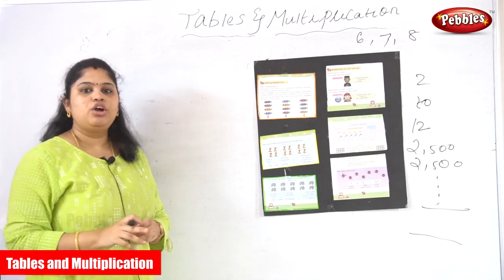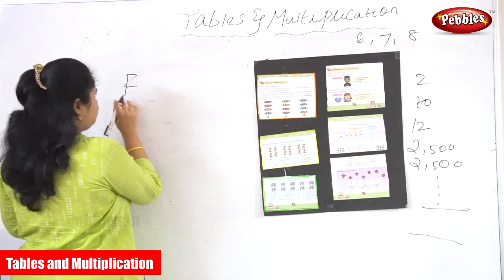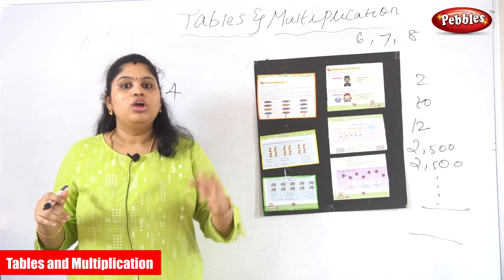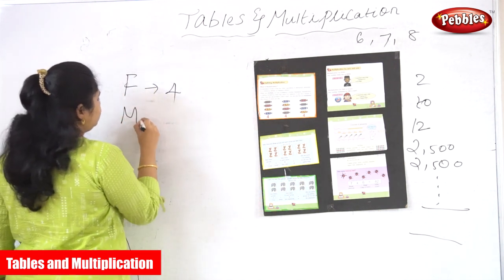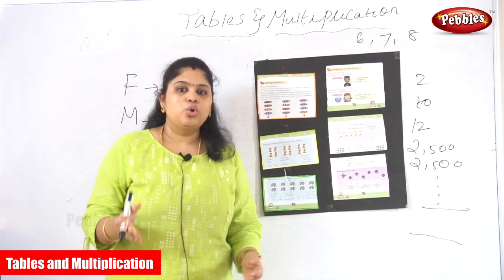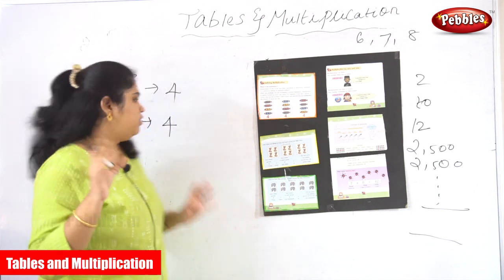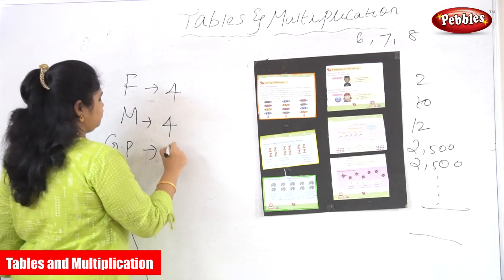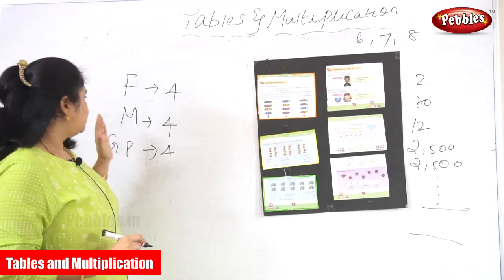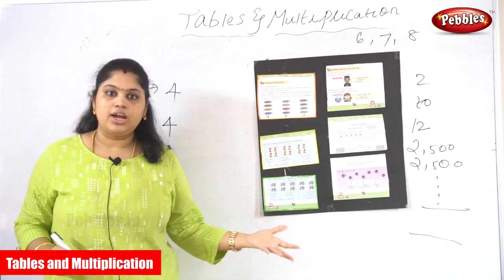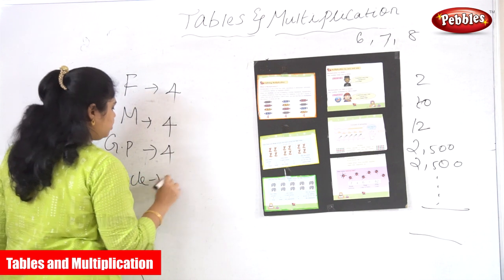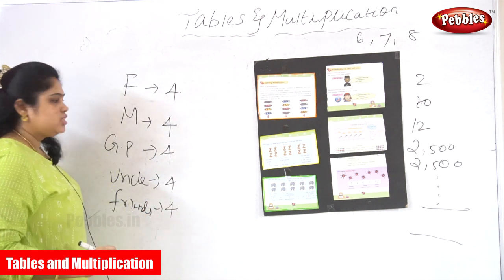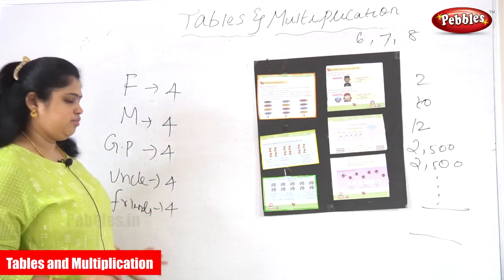Your father is giving four chocolates — I am marking that as F. Without knowing your father gave four, your mother is also giving four candies. Then unknowingly, your grandparents are giving another four chocolates — because grandparents are always very liberal with grandchildren! So your father gives four chocolates, your mother gives four, your grandparents give another four, your uncle also gives four chocolates, and your friend gives another four chocolates. See how many fours there are — one, two, three, four, five.